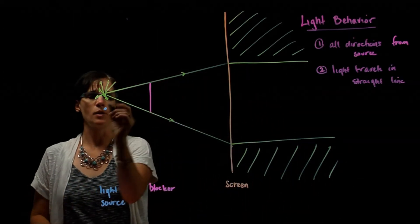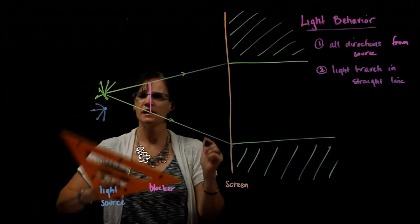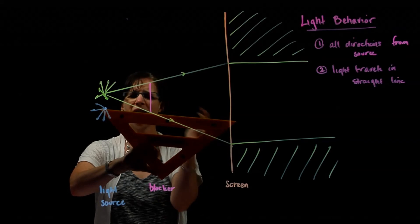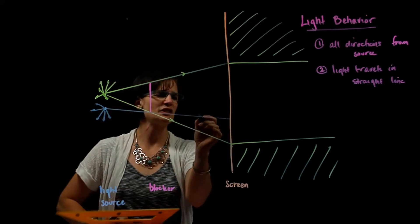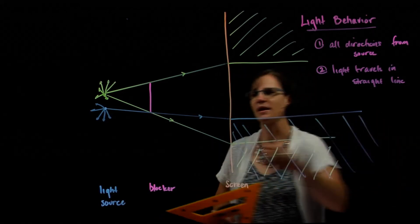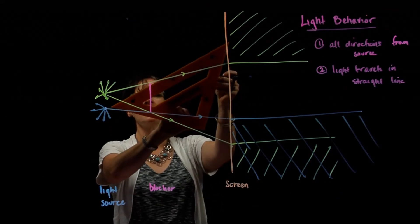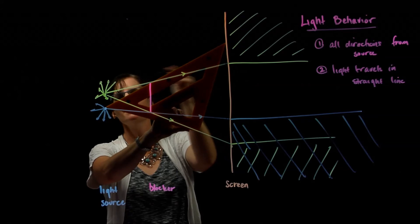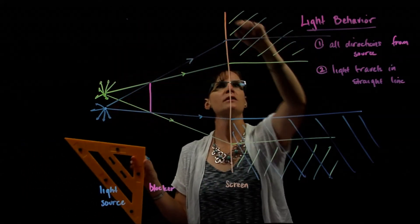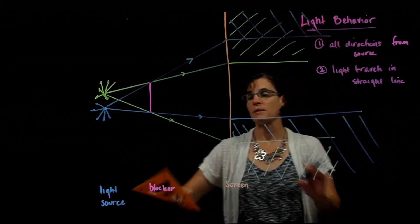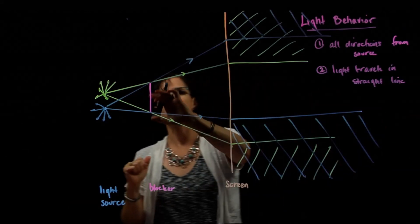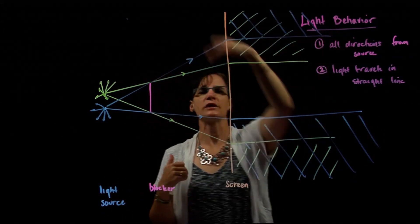Now for the bottom light — I'll use blue to represent it. Light goes out in all directions: rays hit the screen repeatedly until this point where they're blocked. There's one ray that just makes it past, and the very next ray is blocked. So everything below this point is illuminated by the bottom light. Then, just past the blocker, one ray makes it to the screen, and everything above that is illuminated by the bottom light as well.